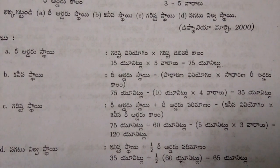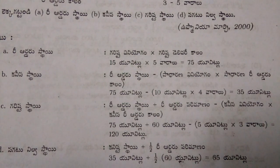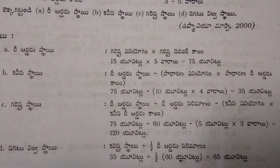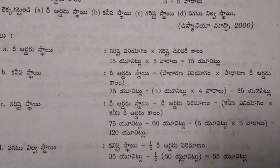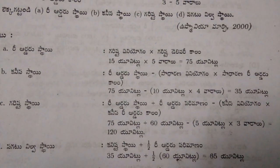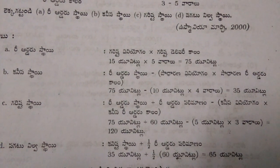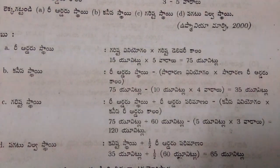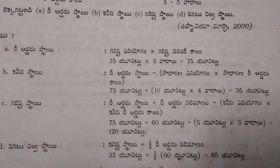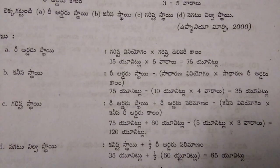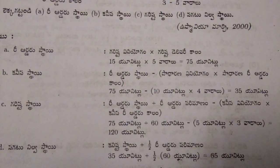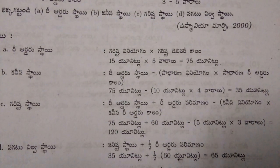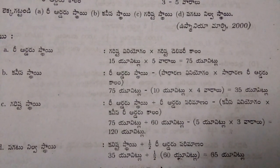Maximum level equals 75 units plus 60 units, that equals 135, minus 5 units into 3 weeks, which is 15. So maximum level equals 120 units.